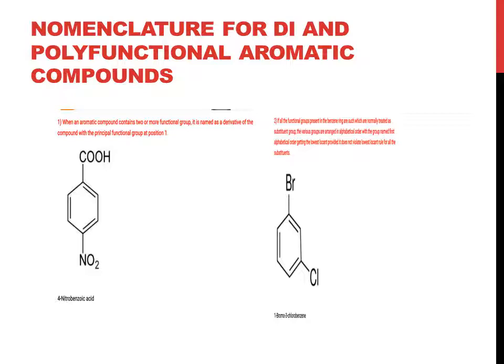First point: when an aromatic compound contains two or more functional groups, then it is named as a derivative of the compound with the principal functional group at position 1. Starting from the first example on the left-hand side, the benzene ring is substituted by COOH and NO2. We give preference to COOH (carboxylic group), and NO2 will be named as nitro at position 4. So it is named 4-nitrobenzoic acid.